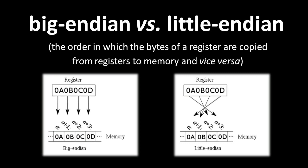Unfortunately, for historical reasons relating to performance, Intel and some other CPU makers chose to use the little Endian scheme. Those reasons no longer make sense with modern hardware, but the x86 architecture is still stuck with little Endian byte ordering.